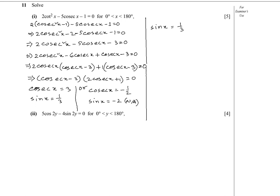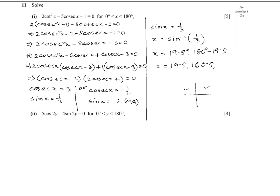With sin x = 1/3, x = sin⁻¹(1/3). Drawing the four quadrants: sin x is positive in the first and second quadrants. The reference angle is 19.5°. The second quadrant gives 180° minus 19.5°, so x equals 19.5° and 160.5°. These are the two values of X.